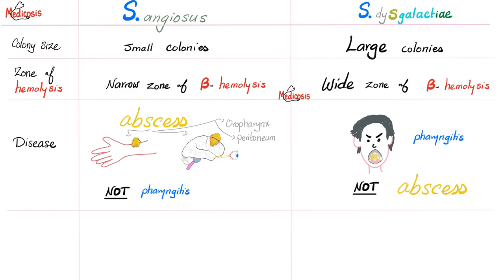Do we have other differences between the two? Yes. Even though both are beta-hemolytic, angiosus will give you a narrow zone of hemolysis, but dysgalactiae will give you a wide zone of hemolysis. Because angiosus grows in small colonies giving a narrow zone, while dysgalactiae grows in large colonies giving a wide zone.